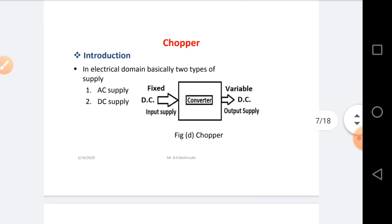If you are considering input as a fixed DC supply and output as a variable DC supply, such a type of Converter is called a Chopper circuit. Here we will discuss about Chopper circuits.